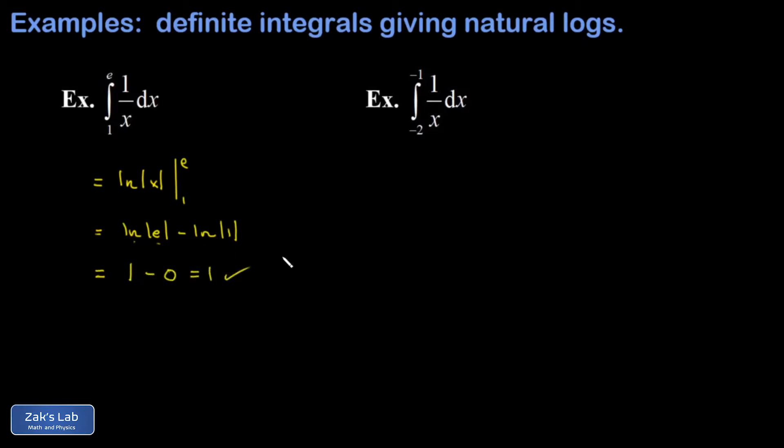What about the second example? I'm getting the area bounded by one over x from x equals negative two to negative one. I guess the anti-derivative of the integrand, and now the absolute value bars are critical because the natural log of a negative number is undefined. Good thing we have those absolute value bars.